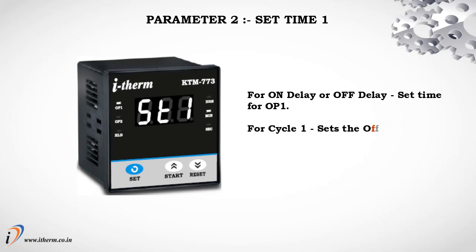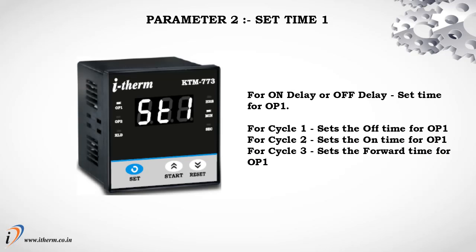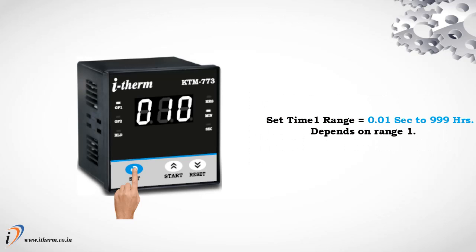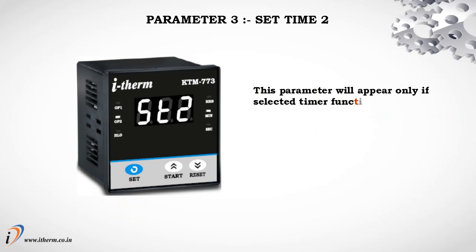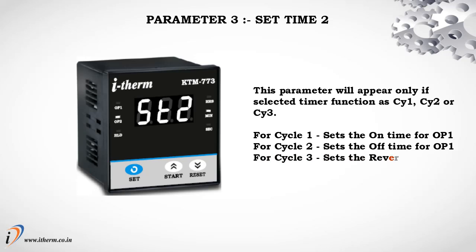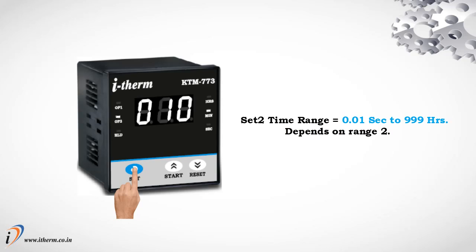Parameter 2: Set time 1. For on delay or off delay, sets the time for output 1. For cycle 1, sets the off time for output 1. For cycle 2, sets the on time for output 1. For cycle 3, sets the forward time for output 1. Parameter 3: Set time 2. This parameter will appear only if the selected timer function is cycle 1, cycle 2, or cycle 3. For cycle 1, sets the on time for output 1. For cycle 2, sets the off time for output 1. For cycle 3, sets the reverse time for output 2. Set time 2 range: 0.01 seconds to 999 hours, depending on range 2.